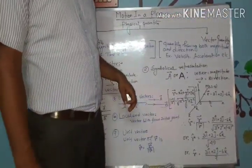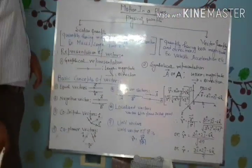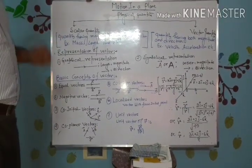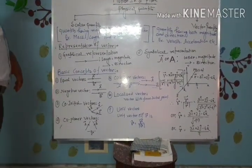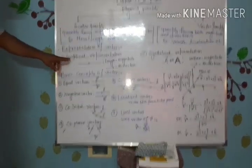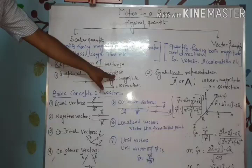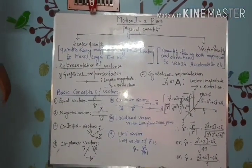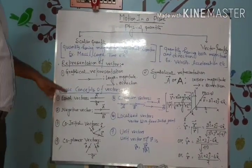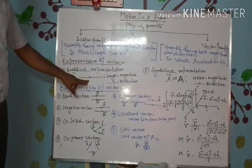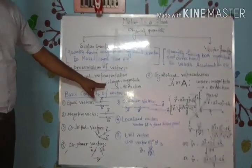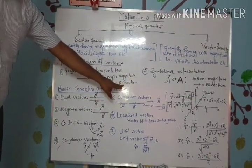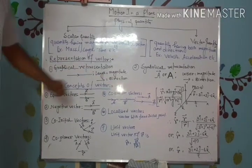Now we have to know how we can represent a Vector Quantity. There are two possible ways. Number 1: Graphical Representation. In Graphical Representation, to represent a vector, we draw a straight line with an arrow, where the length of the straight line gives the magnitude of the vector and the arrow gives the direction of the vector.